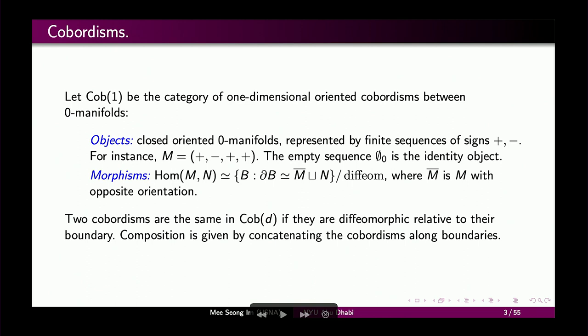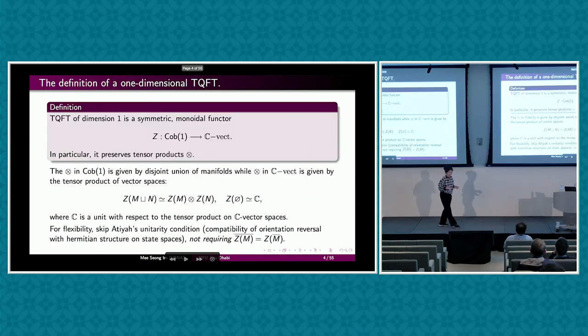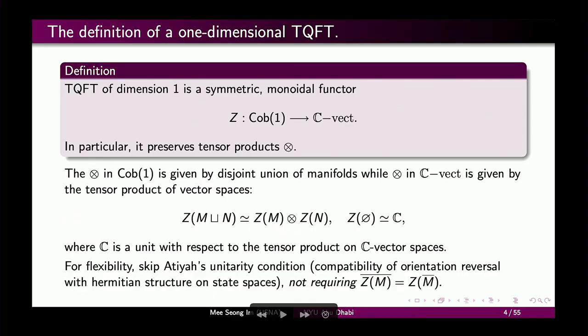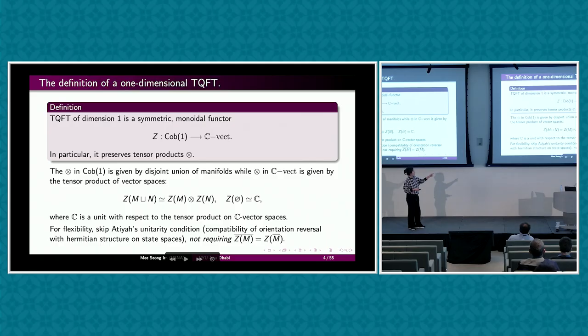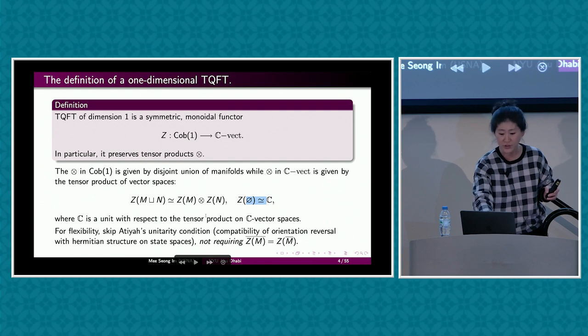Two cobordisms are in the same class if they're diffeomorphic relative to the boundary. The composition is given by concatenating the cobordisms along the boundary — you stack them on top of each other. A TQFT of dimension one is a symmetric monoidal functor Z from cob one to finite-dimensional complex vector spaces, preserving tensor products. The tensor product in cob one is given by disjoint union of manifolds, and Z of the empty manifold is just the ground field.